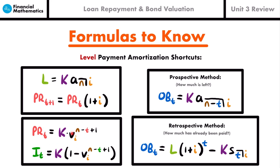These two shortcut formulas are used for calculating the principal or interest paid at any specific time without going through the three-step cycle. For level payments, the principal at time t equals the payment K multiplied by a present value factor v to the power of (n - t + 1) using interest rate i. Similarly, the interest at time t equals K times (1 - v^(n-t+1)). You don't need to memorize both, since if you know the principal, you can subtract it from K to get the interest.